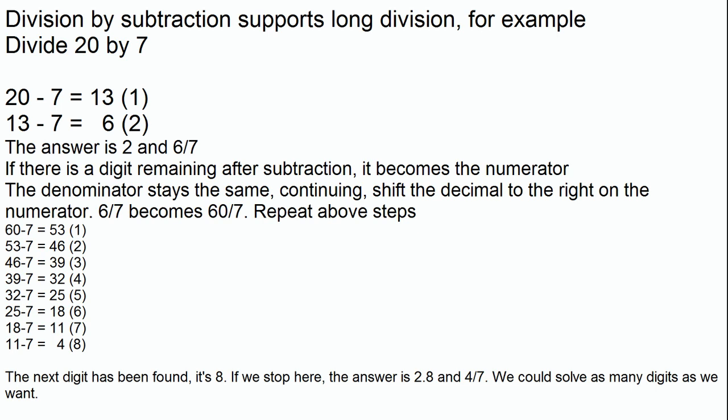The denominator stays the same, it's still 7. If we want to divide it down further, the only thing that we really need to do is shift the decimal point to the right on the numerator. So now it's 2 and 60 over 7 and then we just repeat the same steps. We'll count how many times we could take 7 out of 60. The answer here happens to be 8. So if we stop here we come up with the answer of 2.8 and 4 over 7. But because it's long division you can keep going as many digits as you want.